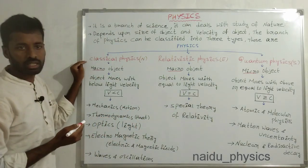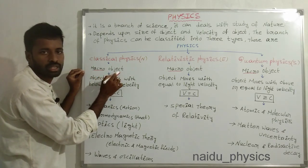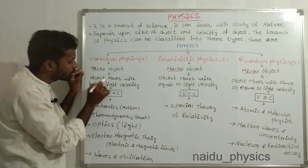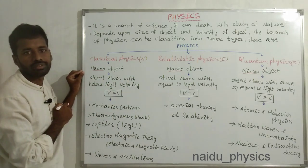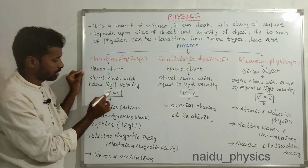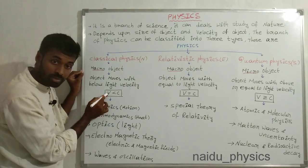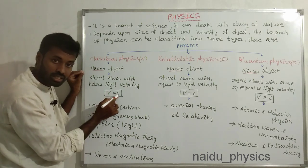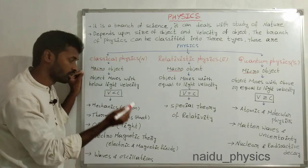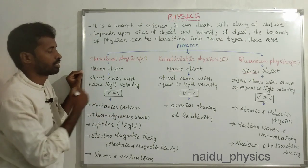Classical physics can explain behavior of macro objects, those objects that move with below light velocity. Mathematically can be represented by V less than C. Here V represents object velocity, C represents light velocity. You know light velocity - 3 into 10 to the power of 8 meters per second.